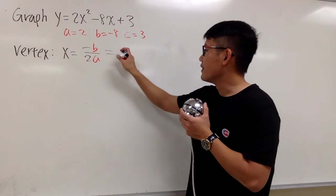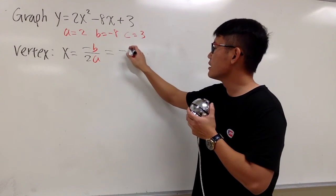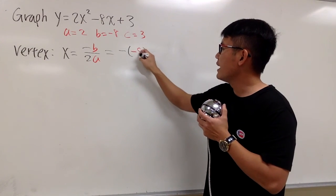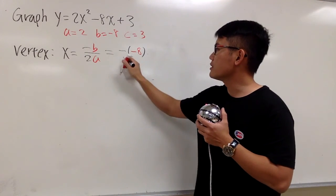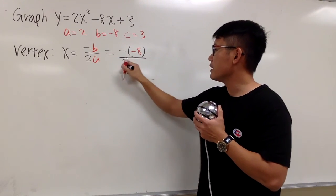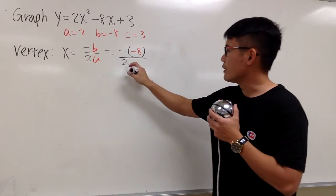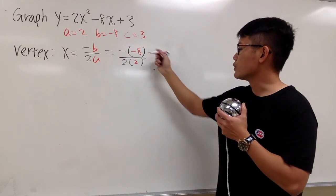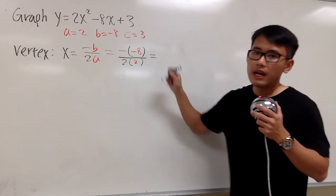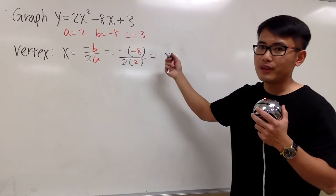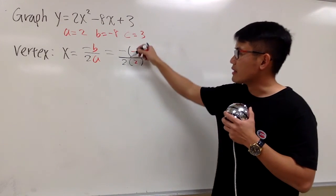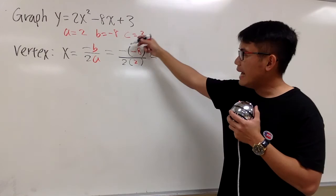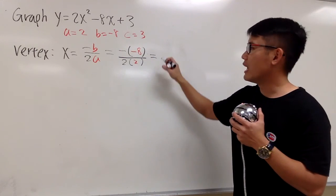Here we have negative, and the b is negative 8, so be sure you open the parentheses, enter negative 8 in the parentheses, and we have this over 2 times a. a is 2, so we have 2 times 2 for a. And let's just work this out. On the top, we have negative negative 8, therefore it is positive 8. On the bottom, we have 2 times 2, which is 4, 8 divided by 4, we have 2.